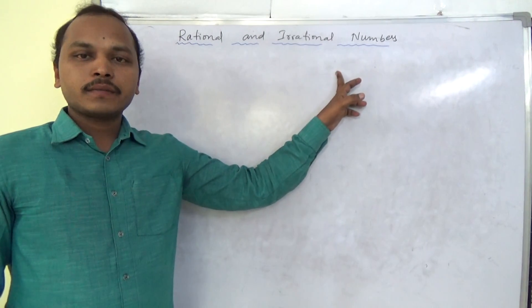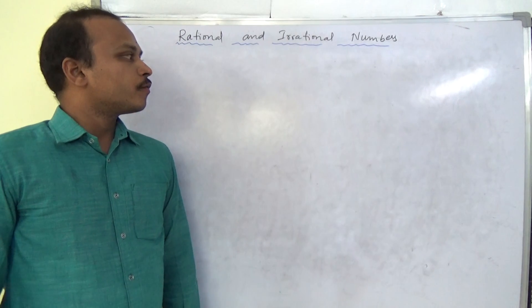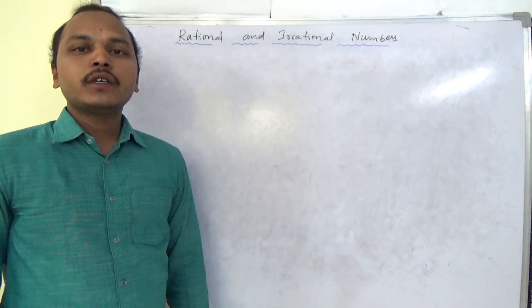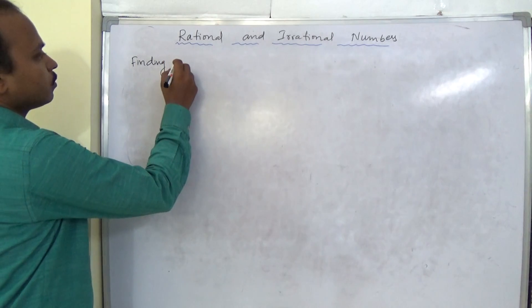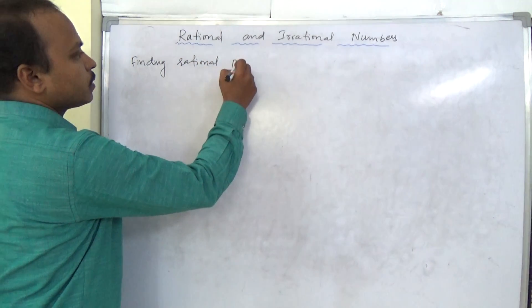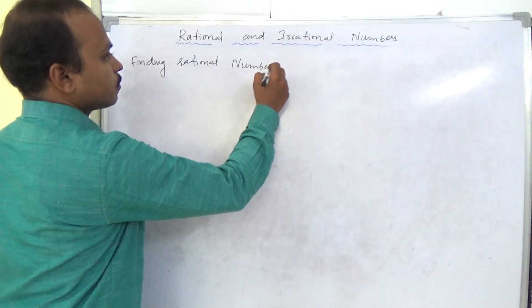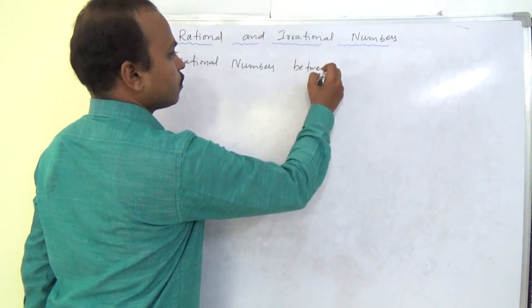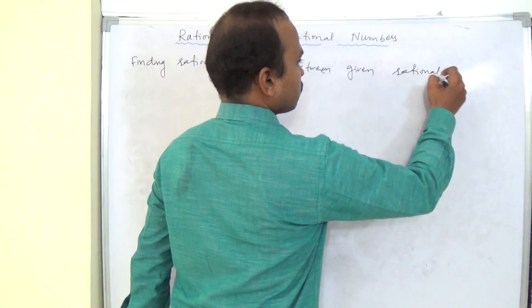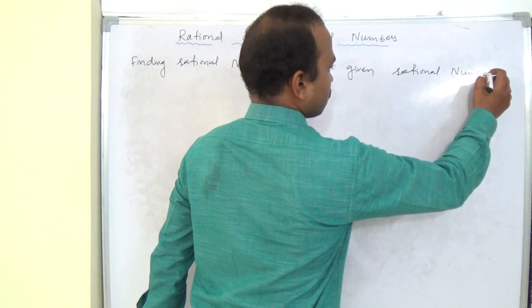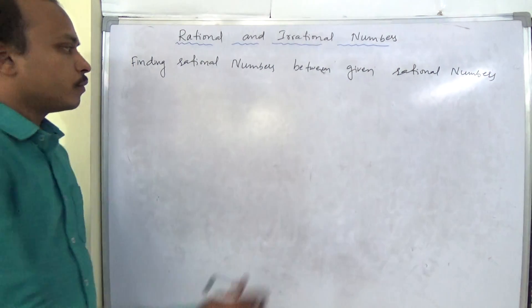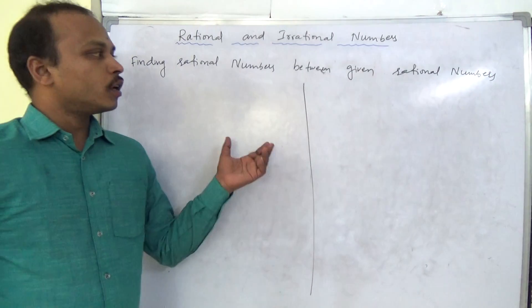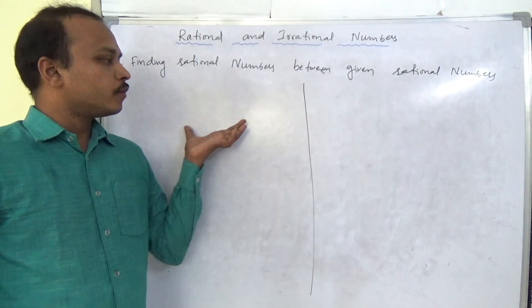Rational and Irrational Numbers. In this chapter, we will see finding rational numbers between any given rational numbers. We will see two methods to find out a large number of rational numbers and a few rational numbers between any two given rationals.